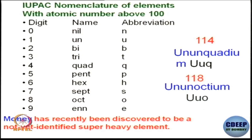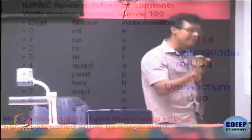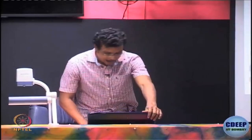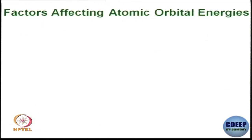Here is a small homework for you. Let us assume money has been recently discovered as a not yet identified super heavy element. What should be its IUPAC nomenclature? The proposed name for this should be unobtainium. Let us move on.